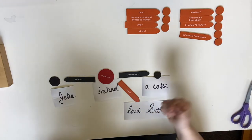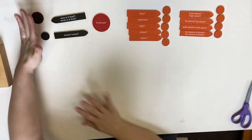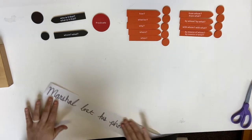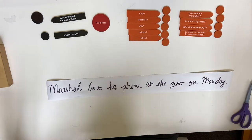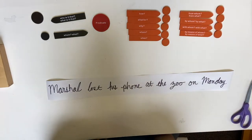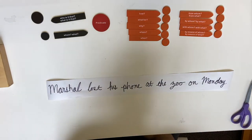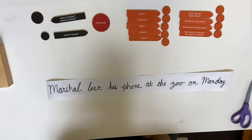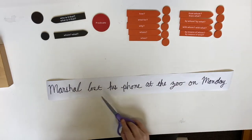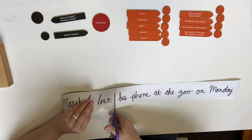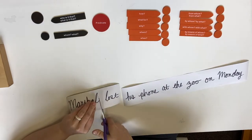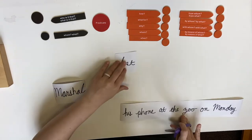Let's do another one. We have a little bit of a longer sentence: 'Marshall lost his phone at the zoo on Monday.' So we need to figure out what our predicate is. What is the action? Lost — to lose something. Lost.